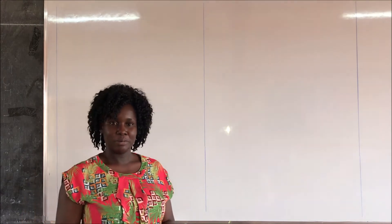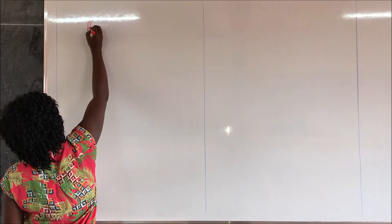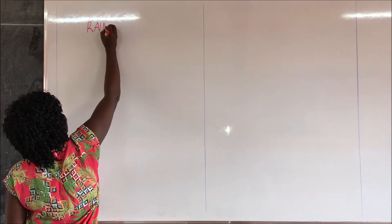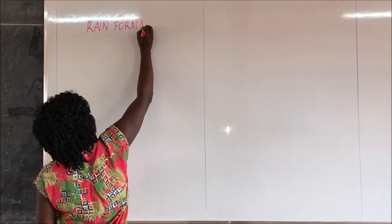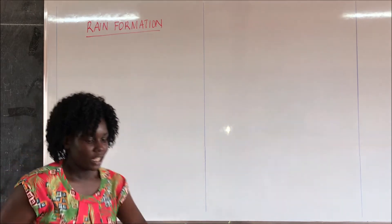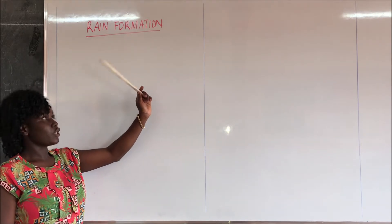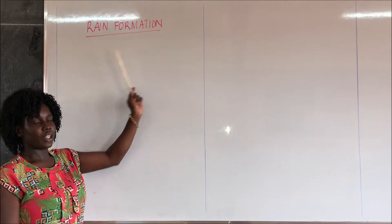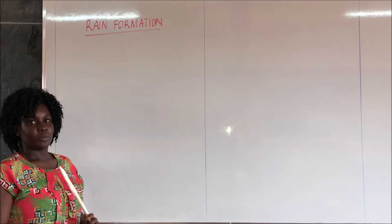Our lesson today, we are going to look at rain formation. Today we are looking at rain formation. Our lesson today is about rain. Can we read together? Rain formation. Have a look at the word formation. I'm giving you a few seconds to spell the word formation. Look at it properly and spell it clearly. Formation.